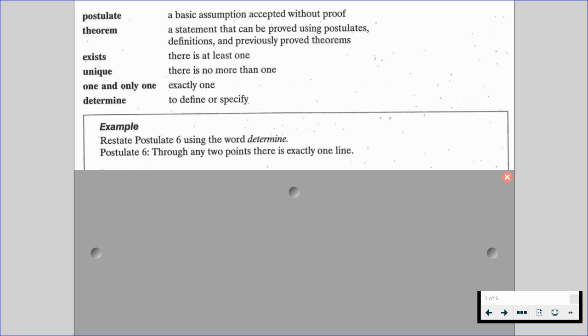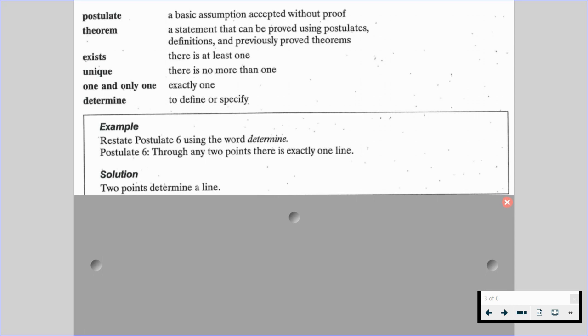We need to know that through any two points there is exactly one line. We don't need to know the name postulate 6. So please, please, please be aware that we do not say postulate 6 or theorem 2-11. We're going to say through any two points there is exactly one line. So let's now take that phrase and use the word determine. So we would say two points determine a line.